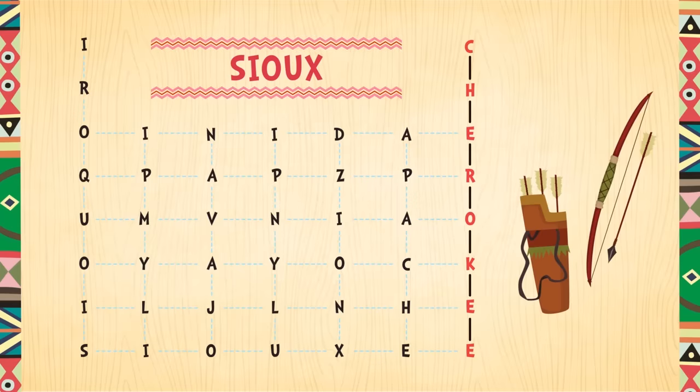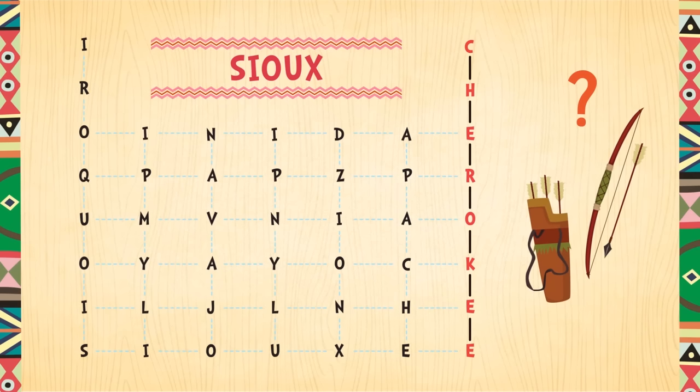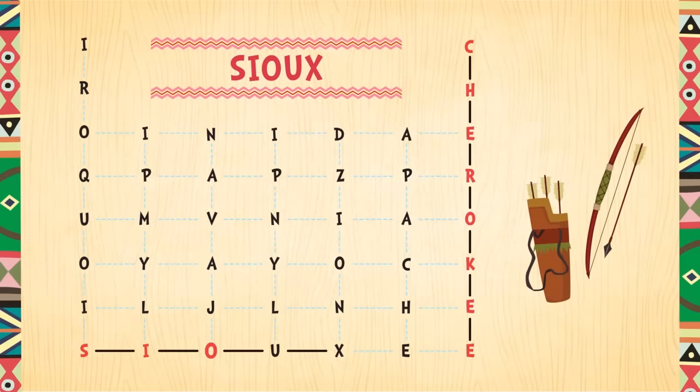Native Americans of the Sioux tribe were known as warriors and hunters. Can you find this name? It's spelled S I O U X. Found it — S I O U X. Great work! The next name is Navajo.